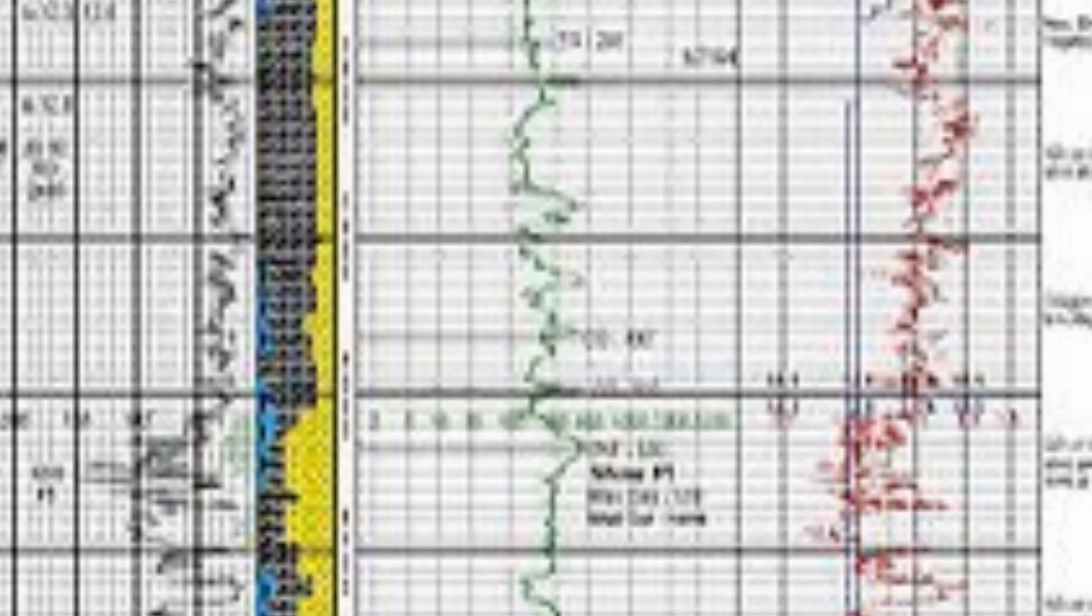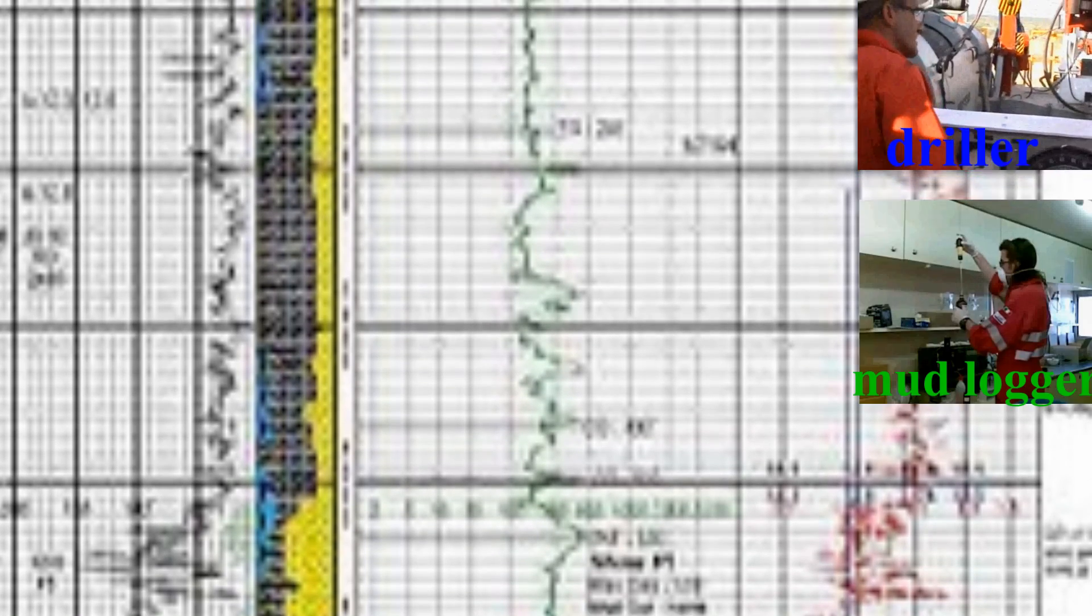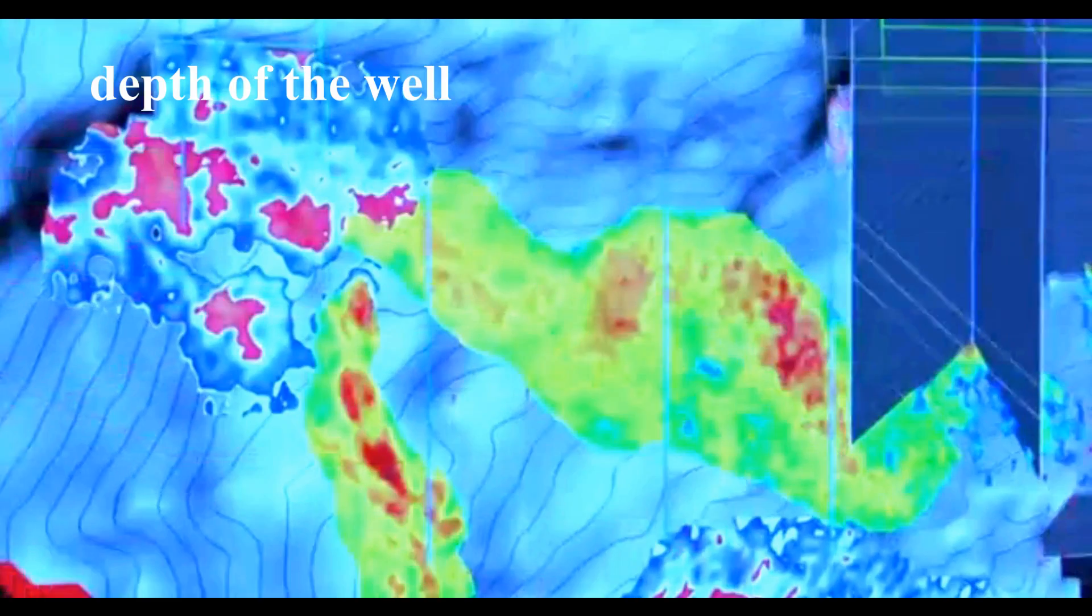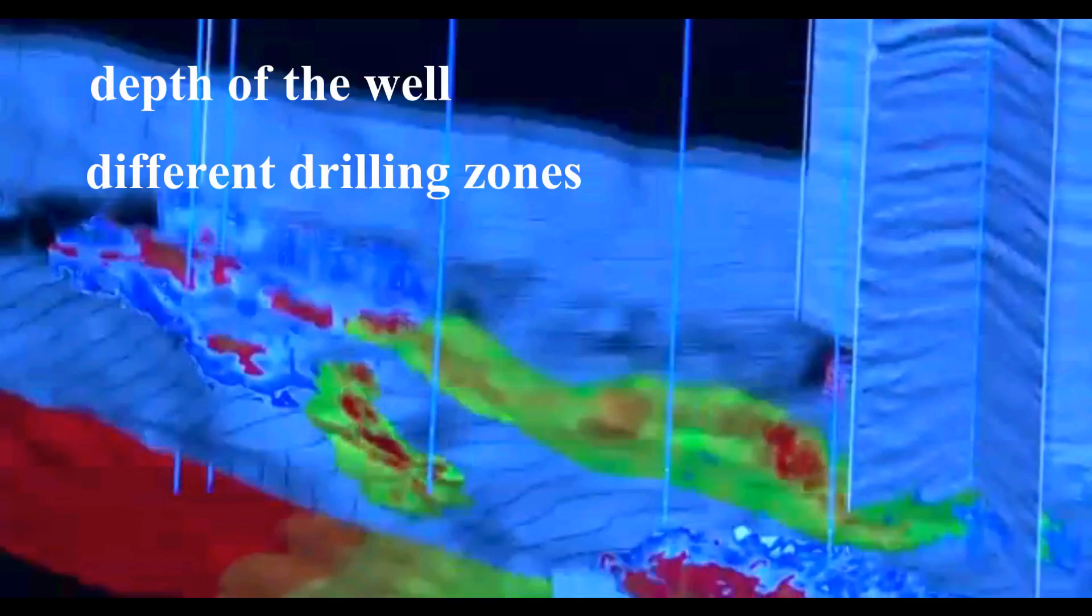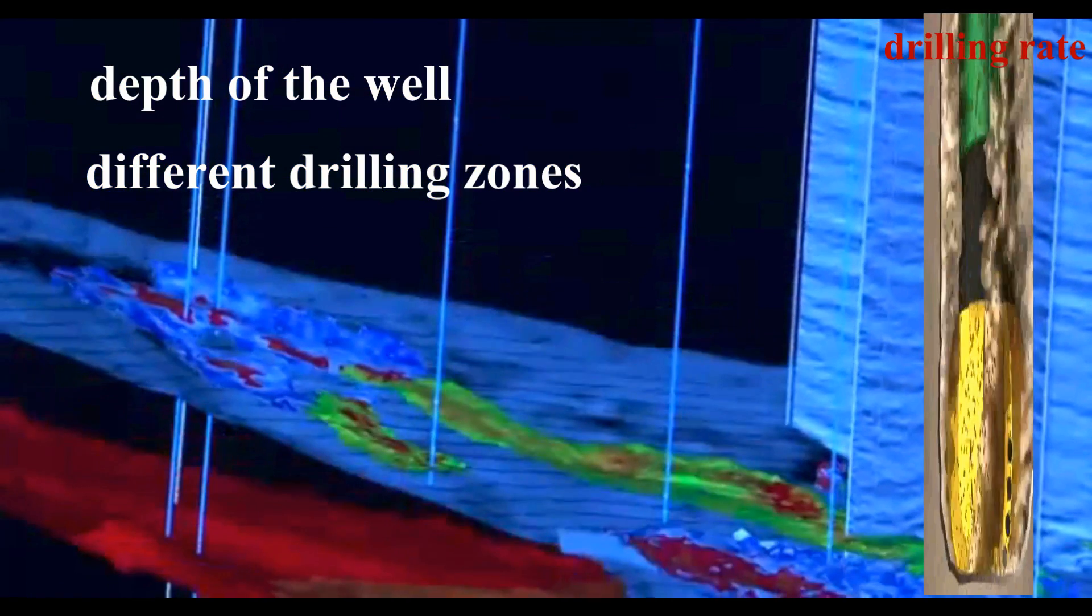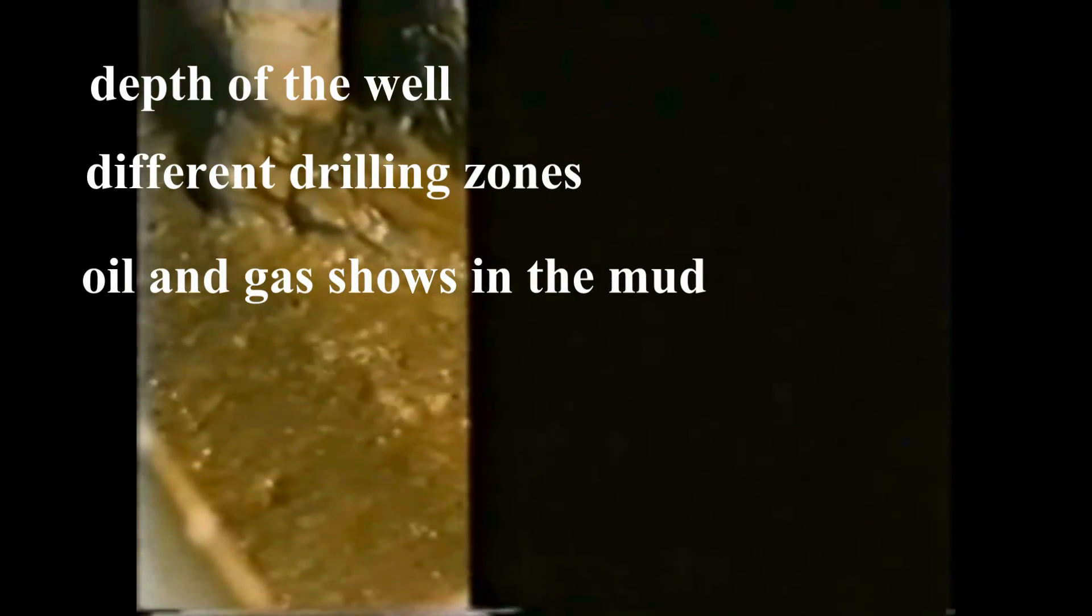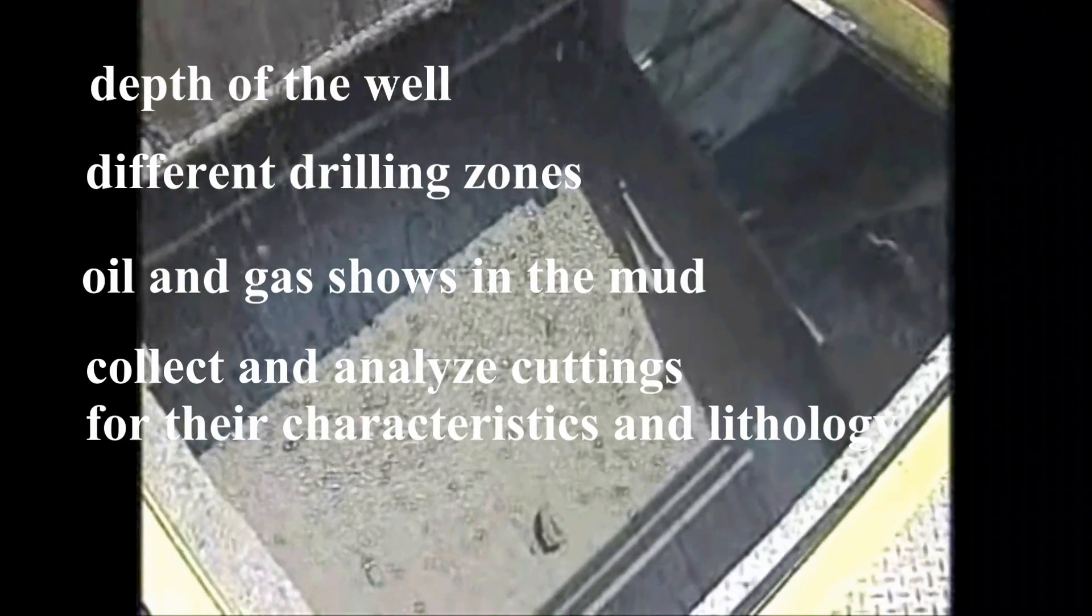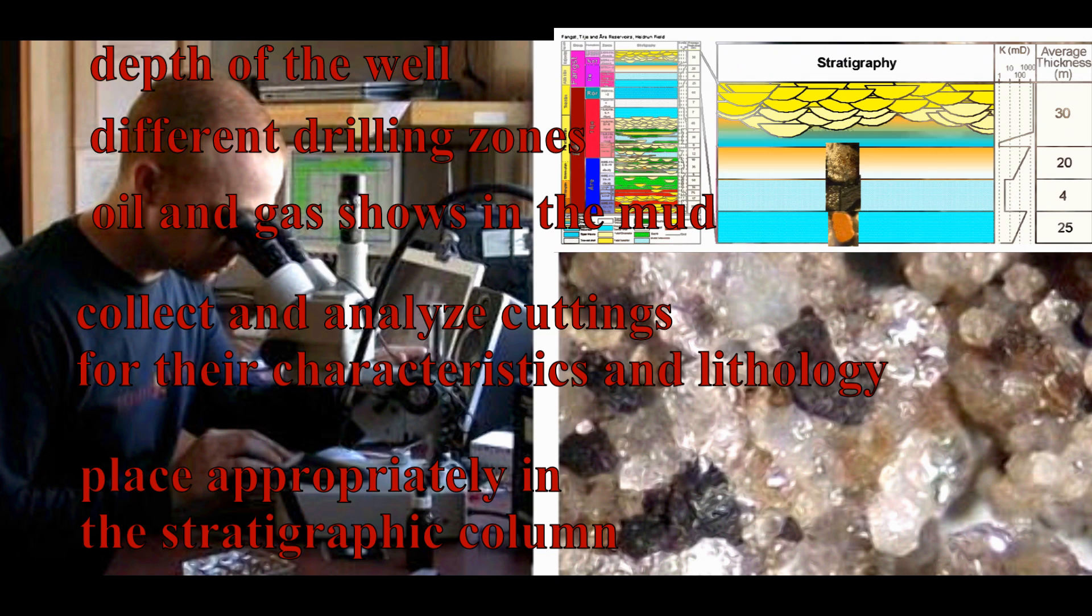With the compiled data on the mud log from the driller, the mud logger, and the geologist, the drilling department is able to determine the depth of the well, calculate the different drilling zones as measured by the rate per hour the drill bit passed through the various rock types, check for oil and gas shows in the mud, collect and analyze the cuttings for their characteristics and lithology, and place the cuttings at their appropriate placement as they might appear on the stratigraphic column.